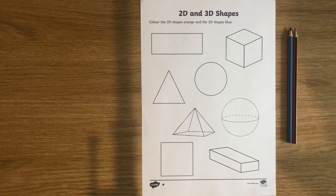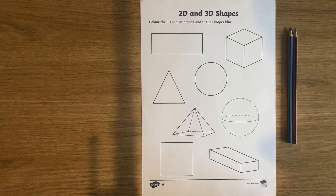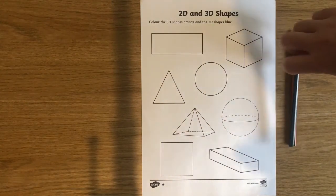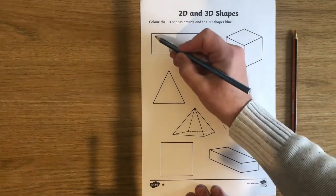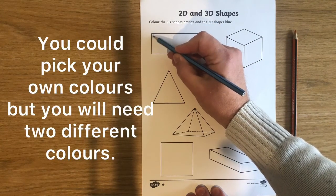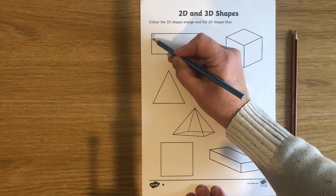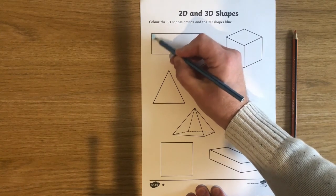We very simply color the 2D shapes, the flat shapes, in one color. So here it says blue. And then I do the 3D shapes, the solid shapes, in orange.